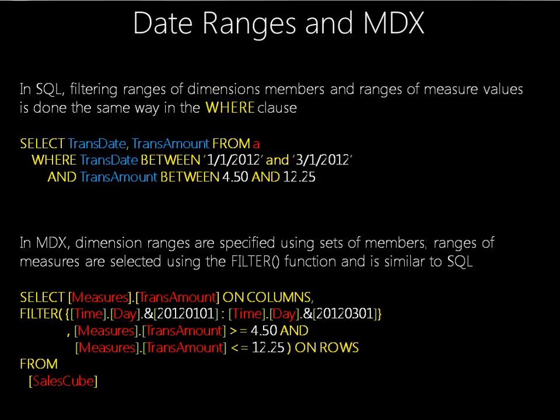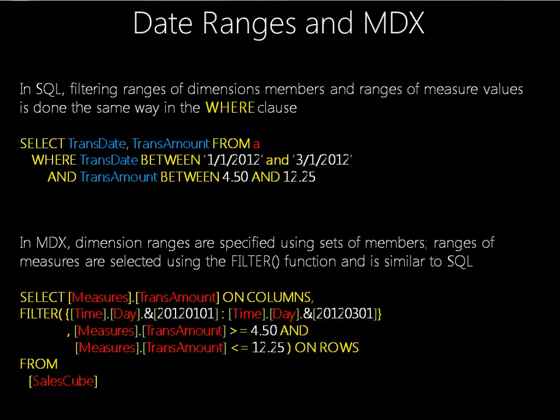MDX is different, because in MDX we filter measures pretty much the same way we do in SQL. Normally we'll see the filter being in the onRows or onColumns statement, not really in the WHERE clause, so that's a little different, but the syntax is about the same. What is very different is when we're filtering dimension values. In MDX, dimensions have members, and everything is done in terms of sets. So to filter for a range of dates, we need to determine a set that includes all of the date members we want in the query.